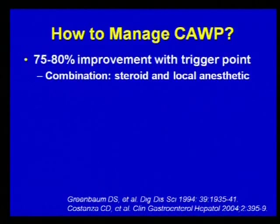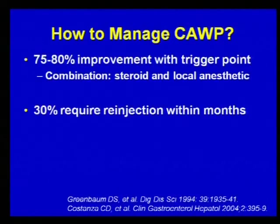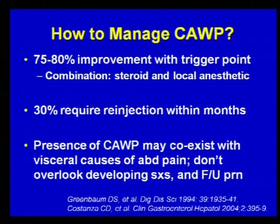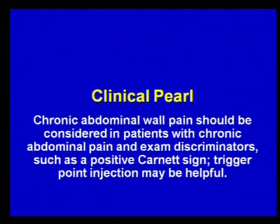Most patients with abdominal wall pain will improve with a local trigger point injection of a steroid and local anesthetic. About a third of patients will require reinjection within several months. Importantly, once someone has been established to have abdominal wall pain, that doesn't protect them against developing other organic diseases — so if they present with a change of symptoms, don't overlook visceral causes. The clinical pearl: chronic abdominal wall pain should be considered in patients with chronic abdominal pain and a positive Carnett sign, and in those cases a trigger point injection may be quite helpful.